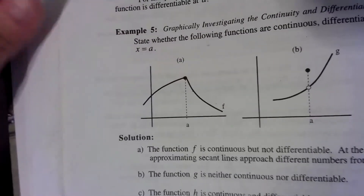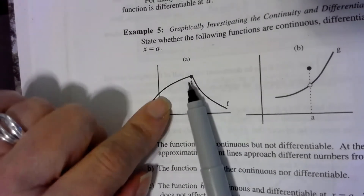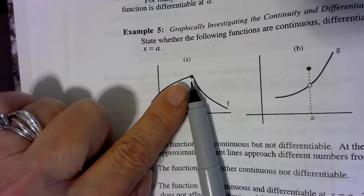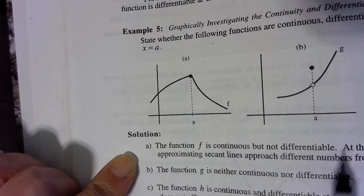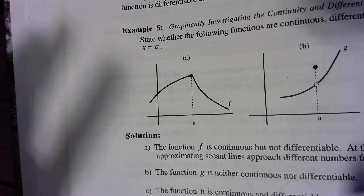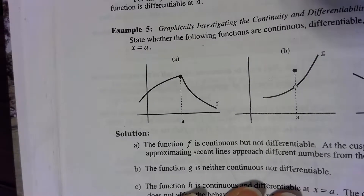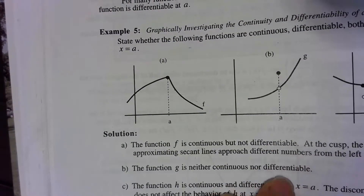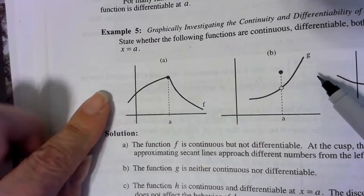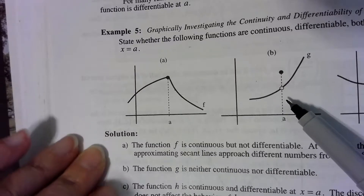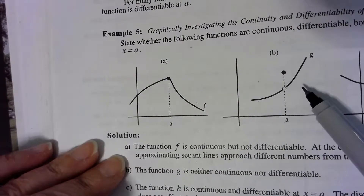A good example is at the bottom of page 144 — we have a cusp or a corner. The limit exists at x equals a, f of a is defined, and the limit equals the function output value at a. But there's a corner there. So as the solution says, f is continuous but not differentiable. At the cusp, the slopes of the secant lines approach different numbers from the left and the right. In another case, the limit exists and the function is defined, but the function output value is not equal to the limit — so it's not continuous and not differentiable at that point.